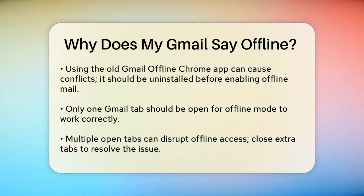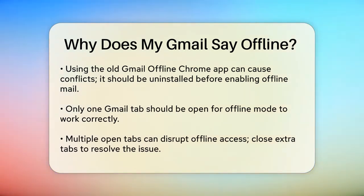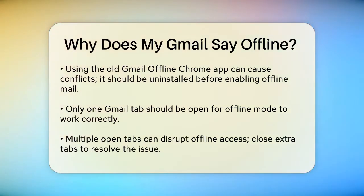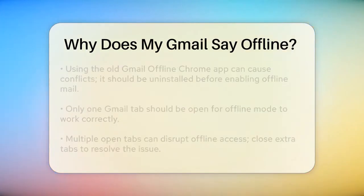If you're using the old Gmail offline Chrome app, this could also cause problems. You need to uninstall the old app before enabling offline mail in your Gmail settings. Having both can lead to conflicts and prevent offline mode from working properly.